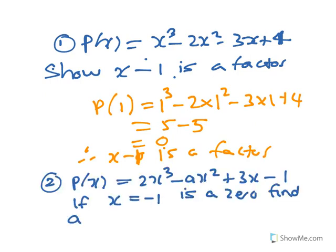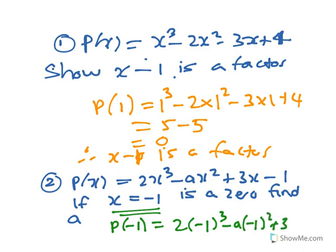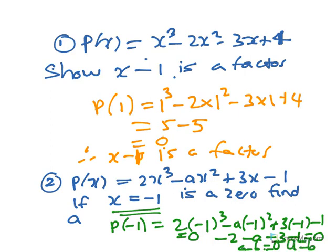If x equals minus 1 is a zero, find a. You put p(minus 1) into the polynomial and that equals 0. You get minus 2 minus a minus 3 minus 1, so a minus 6 equals 0, which gives a equals 6.